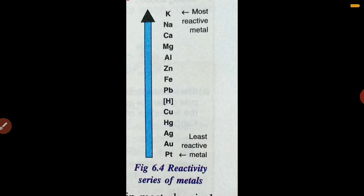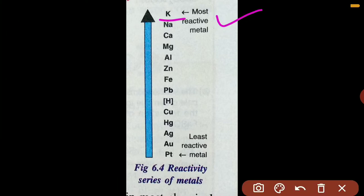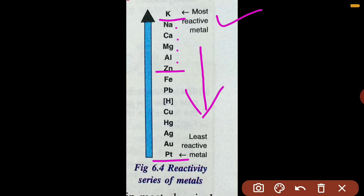In the metal reactivity series, the most reactive metal — potassium — is kept at the top, and the least reactive metal is at the bottom. Reactivity decreases as we go down the list. As you can see, zinc is above copper in this series, therefore zinc is more reactive than copper.